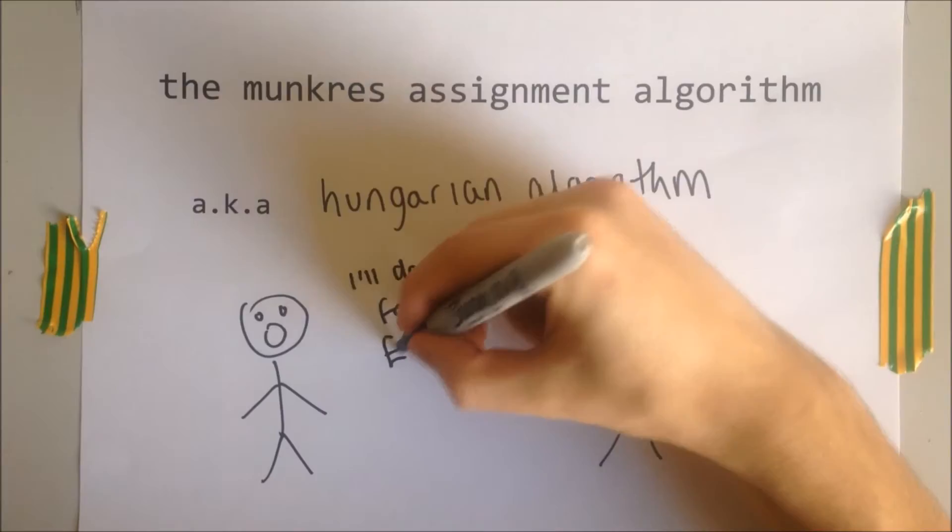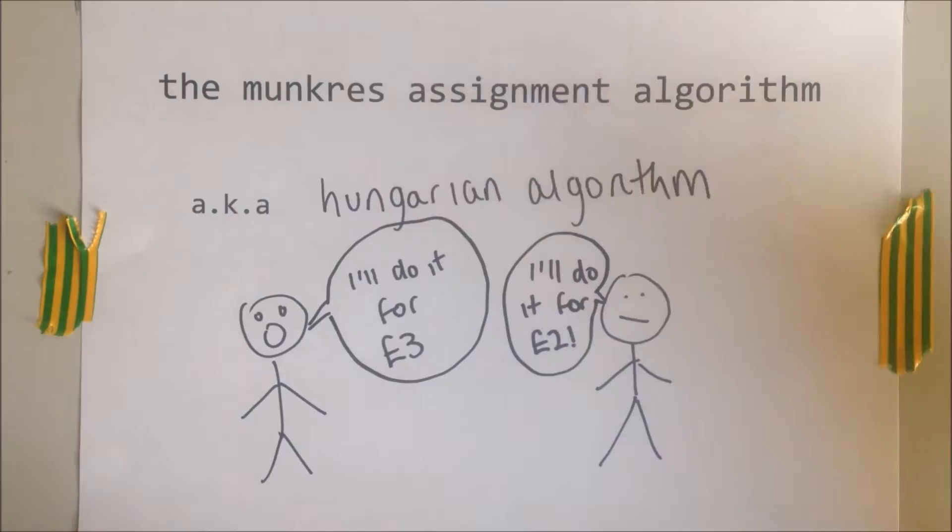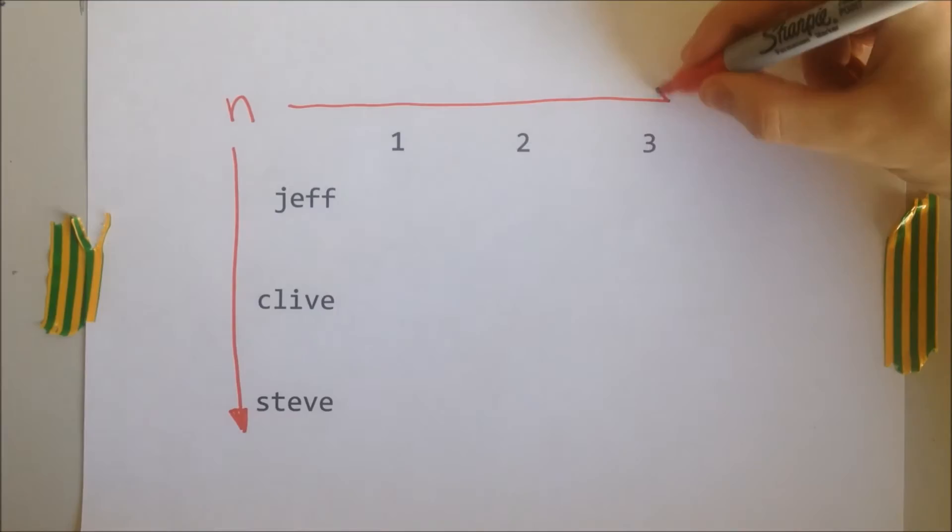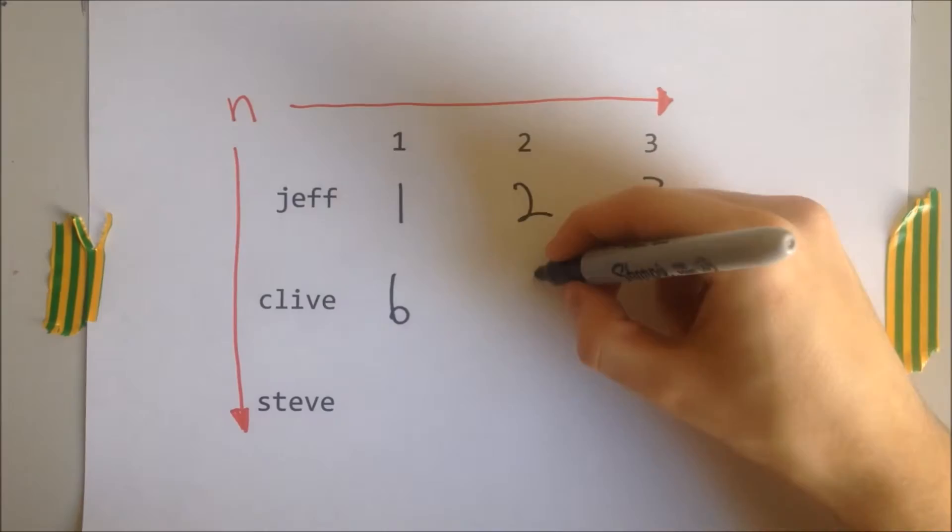This algorithm is used to solve the assignment problem, which is finding the most cost effective way to assign workers to jobs given an n by n matrix. We need to assign each worker to a job, but they all do it for different costs and we want to find the cheapest.